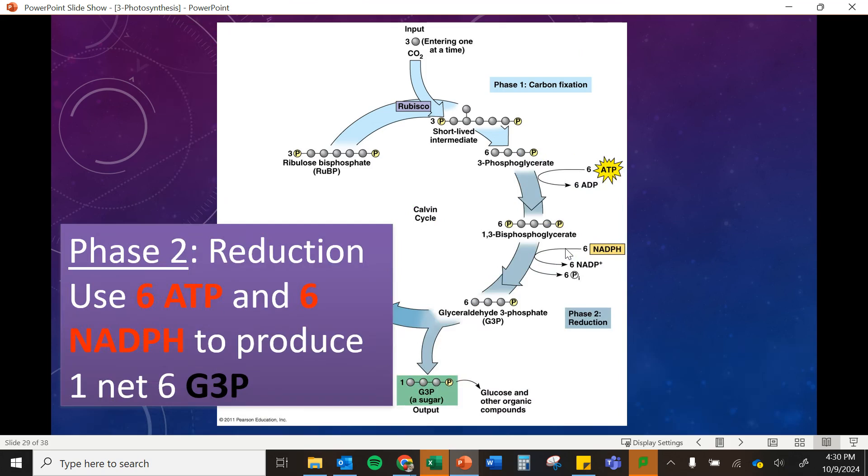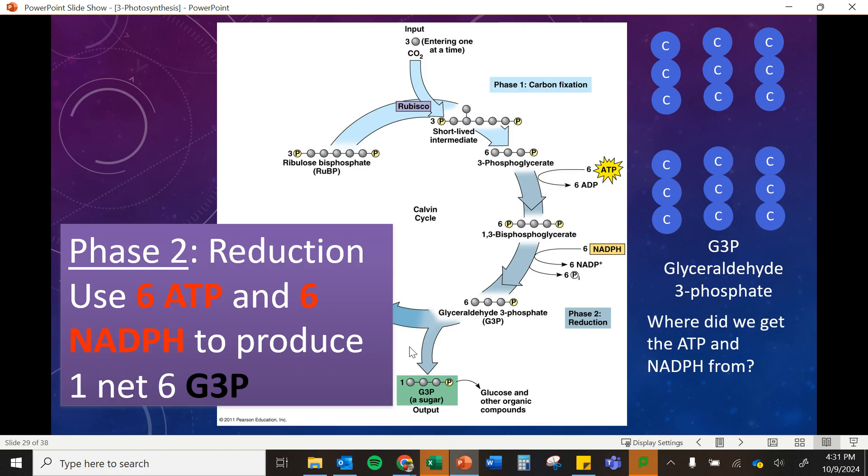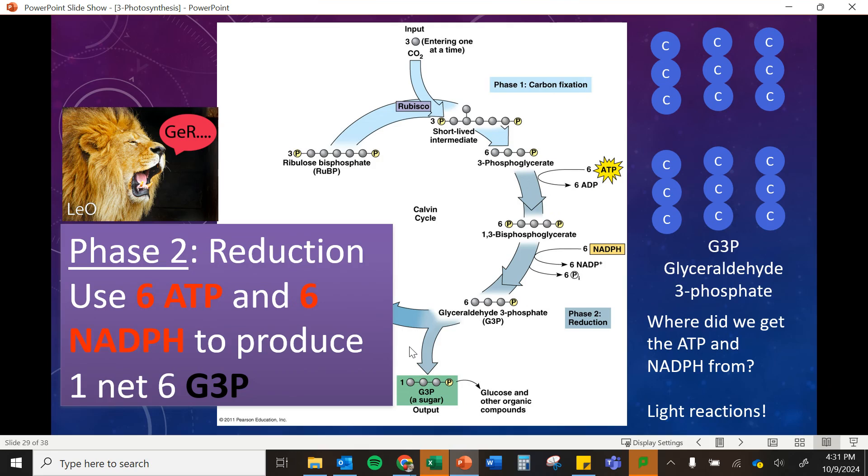The second step is reduction. This is where we're using some of that ATP and NADPH that we produced in our light-dependent reactions. And what's going to happen is these three-carbon things, which we don't need to know the name of them, are going to get turned into G3P, which is glyceraldehyde 3-phosphate. And that ATP we just mentioned came from those light reactions. So these are being reduced. You might remember gain electrons is reduced. We're basically just taking electrons from NADPH and some from ATP and the energy from ATP to add electrons here and turn it into G3P.